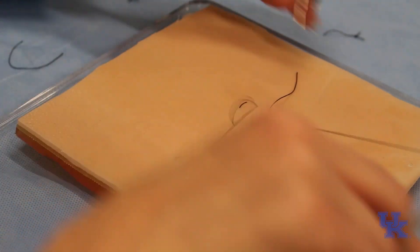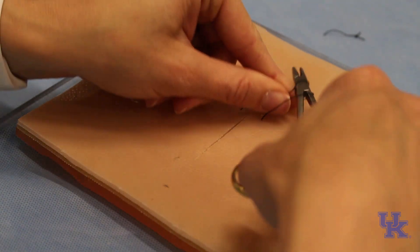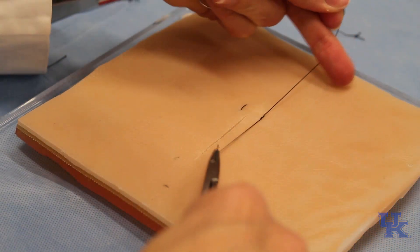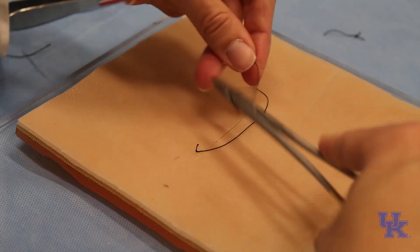So as you can see there's nothing extremely complicated and then you are going to tie. You see how that helps to evert those skin edges. That's where a horizontal mattress can be helpful.